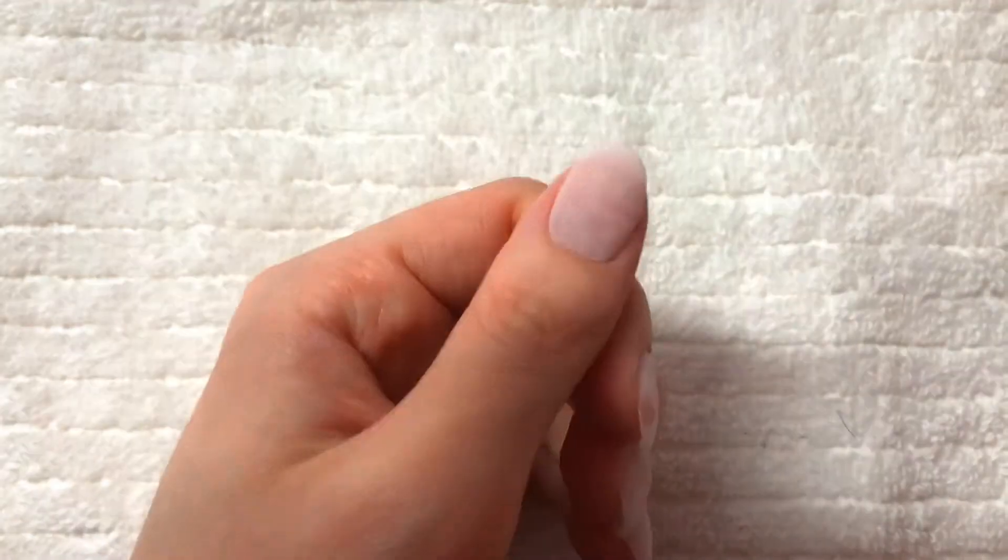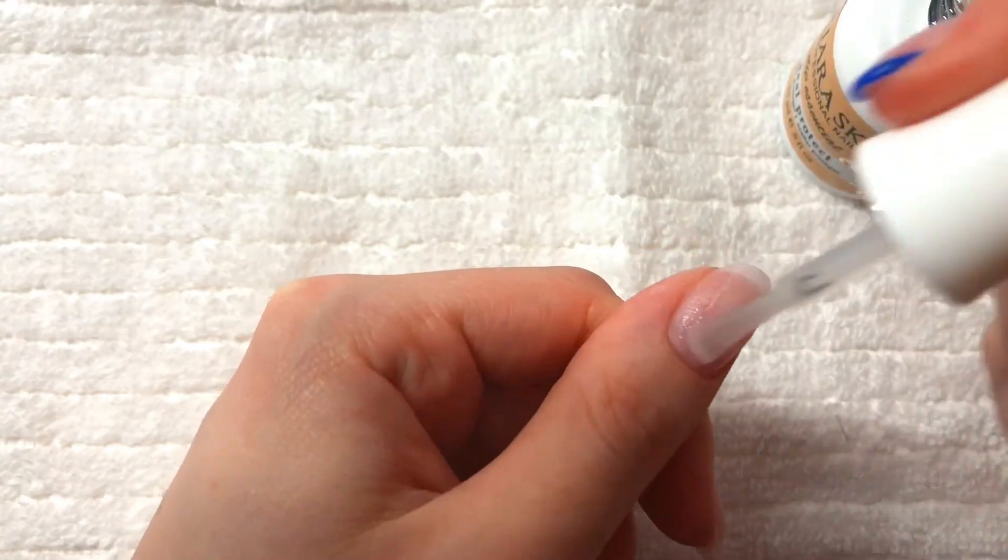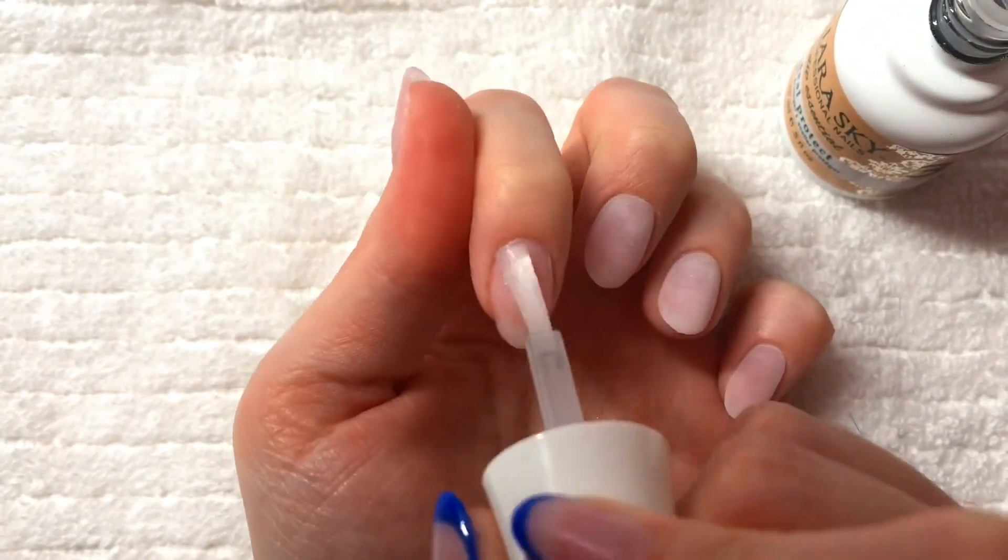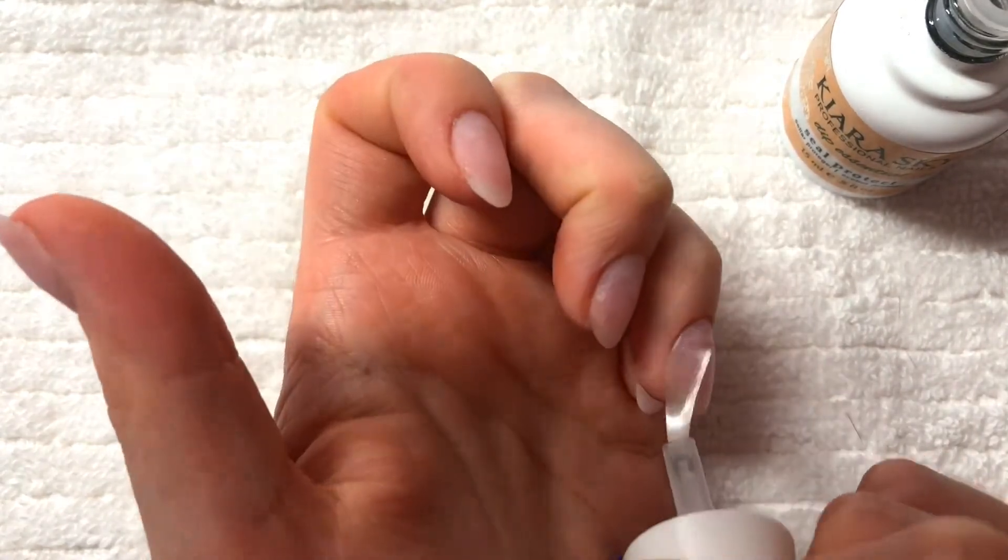Once I'm happy with it, I'm going to apply my Seal Protect to all of my nails. This helps the dip powder to harden. That way when you go in to file, you don't accidentally file away any of the dip powder.